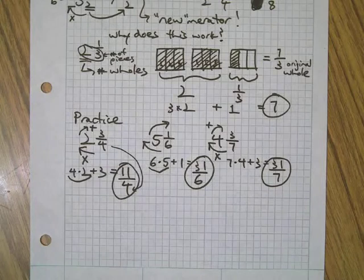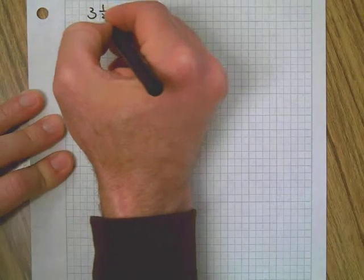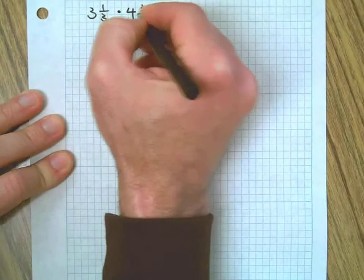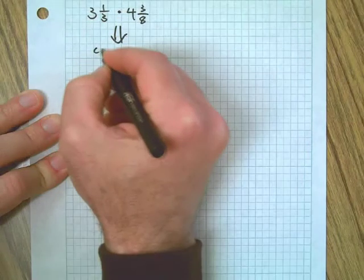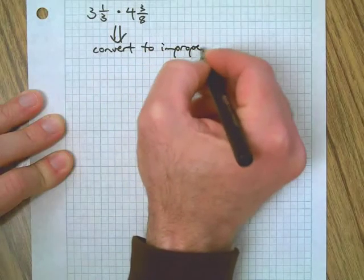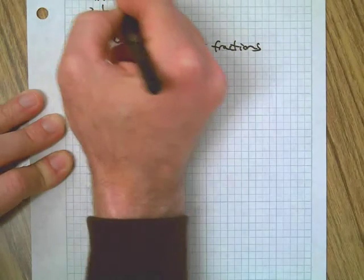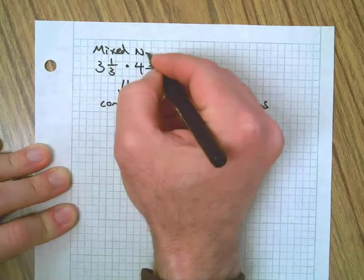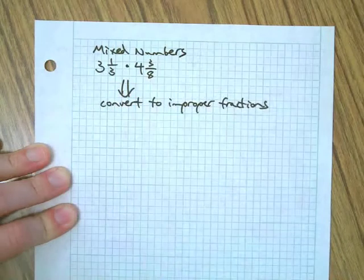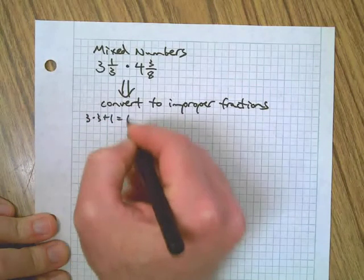Alright, so now that we have that all done, let's do a little example of a problem here. Say we have two mixed numbers: three and one-third times four and three-eighths. First we want to convert to improper fractions—these are mixed numbers, of course.